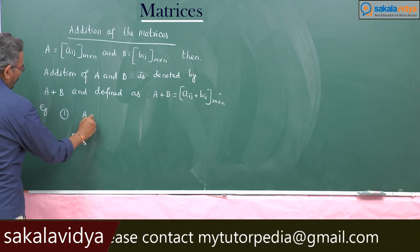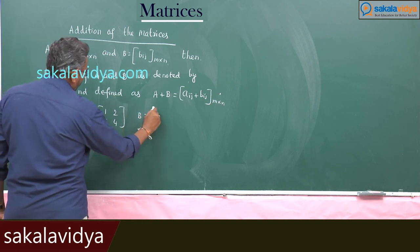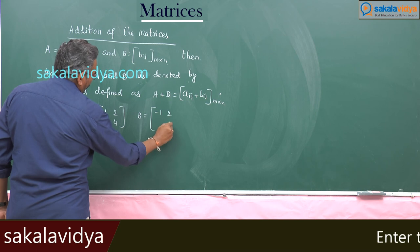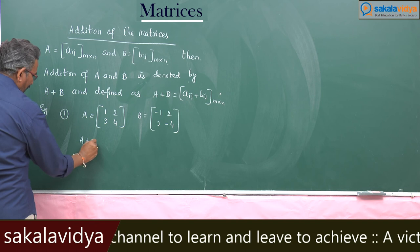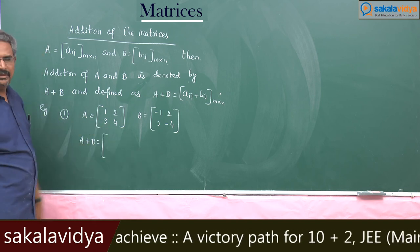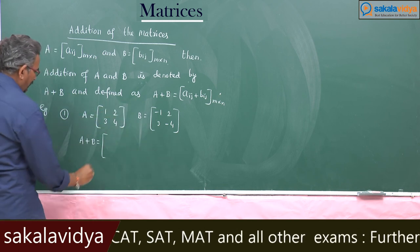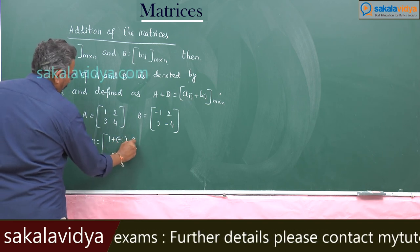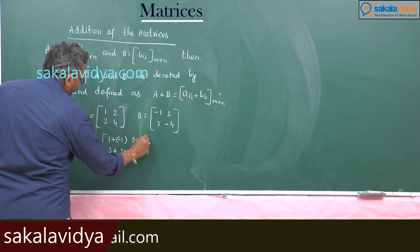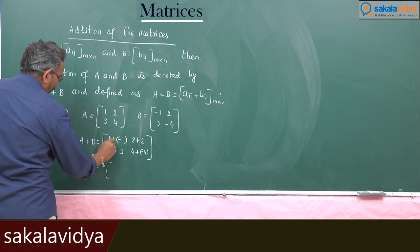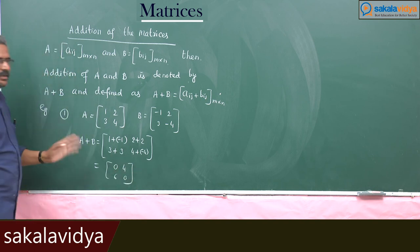Example: A = [1, 2; 3, 4] and B = [-1, 2; -4, 3]. Now A + B — since they are the same order, we add corresponding elements: 1 + (-1), 2 + 2, 3 + (-4), 4 + 3. So A + B equals [0, 4; -1... wait: 0, 4; 6, 0]. Wait — the result is [0, 4; 6, 0]. This is A + B.